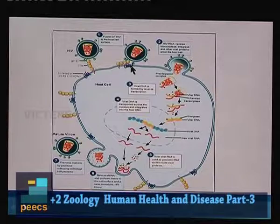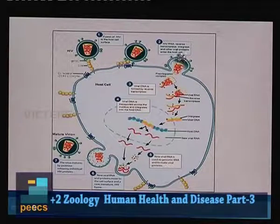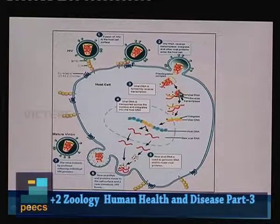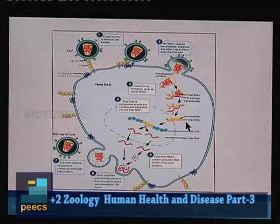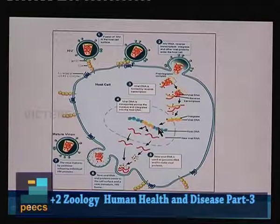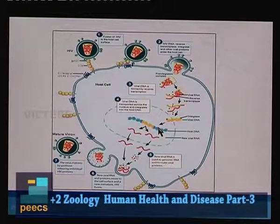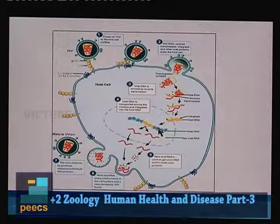After attachment with the host cell, the viral RNA, reverse transcriptase, integrase and other viral proteins enter into the host cell. Using reverse transcriptase, the viral RNA gives rise to a DNA copy — this is called reverse transcription. This viral DNA, along with integrase, enters into the nucleus of the host cell, where it is integrated with the host DNA using integrase.